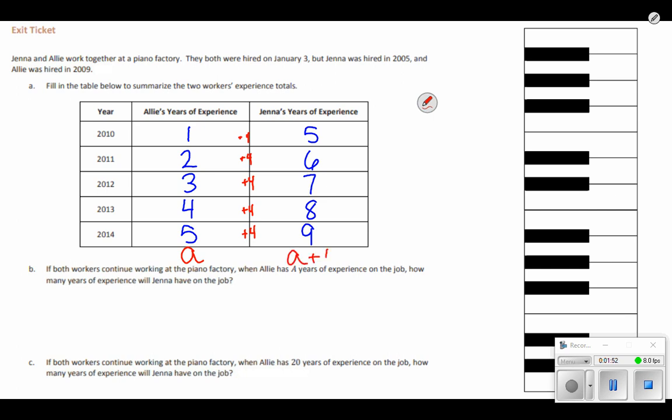Jenna's is going to be A plus four. So with an expression, Jenna's will always be Allie's amount of years plus four more years.